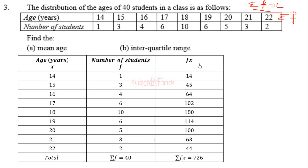The only calculation you need to do is multiplying the age column by the frequency column, and that will give you fx. So 14 by 1 gives you 14, 15 by 3 is 45, 16 by 4 is 64, up to the last one, 22 by 2 which is 44.